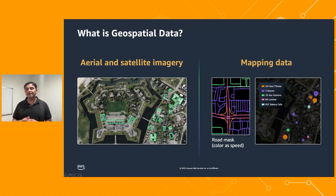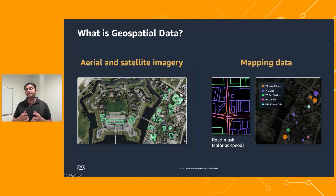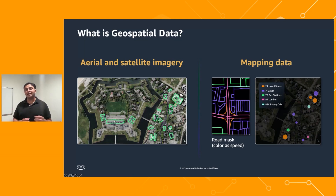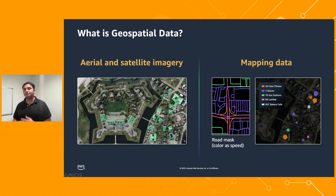Map data includes building footprints, road networks, and also comes from devices and sensors around you to express the neighborhood. For example, point of interest data that you use multiple times a day to find a coffee shop, restaurant, or gym near you.